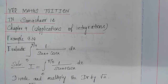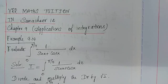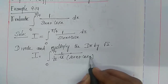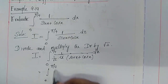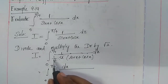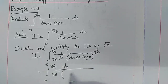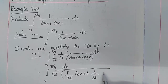Therefore we get: integral from 0 to π/4 of 1 divided by √2 times [(1/√2)cos x + (1/√2)sin x] dx. We write 1/√2 outside the bracket, and inside we have (1/√2)cos x + (1/√2)sin x.